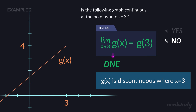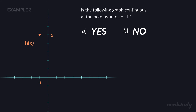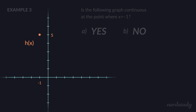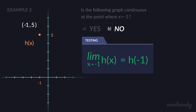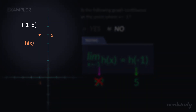Let's look at our last example. It asks: is the following graph h(x) continuous at the point where x equals negative one? This graph is entirely one single point — negative one, five — literally there are no other points. Is the graph continuous at that point? The answer is definitely no. Sure, h(negative one) equals five, but can we say that the limit as x approaches negative one for h(x) equals five? We can't. As x approaches negative one from the left and from the right, there are no points approaching negative one.